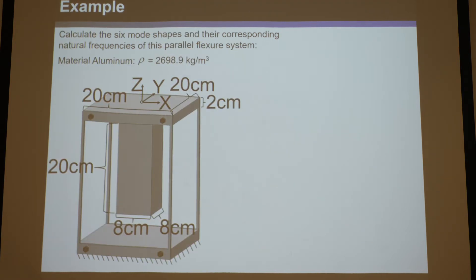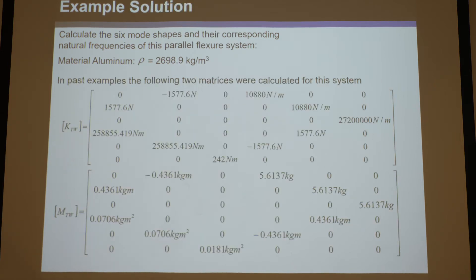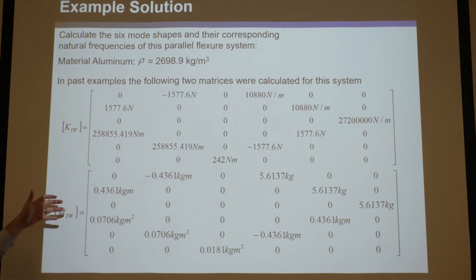Let's find the natural frequencies of this system. You might be disturbed to say: wait, I thought anything in three dimensions has infinite natural frequencies. You're right — but not if you assume all the mass is in a stage that's infinitely rigid, and all of the compliance is in the elements with no mass in those elements. That's where you just get six. Let's do our example: we want to calculate the six mode shapes and natural frequencies of this parallel flexure system. I gave you all the geometries, topology, numbers, and material properties — we calculated the stiffness matrix and mass matrix.